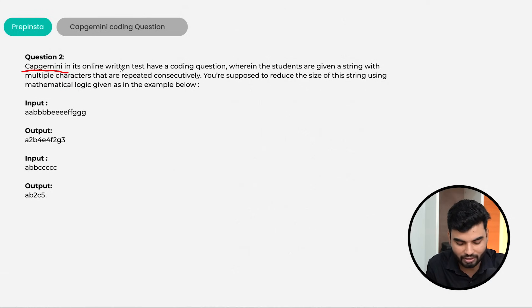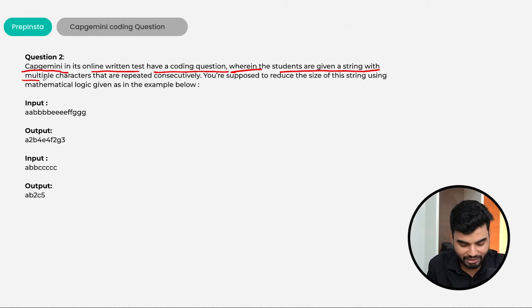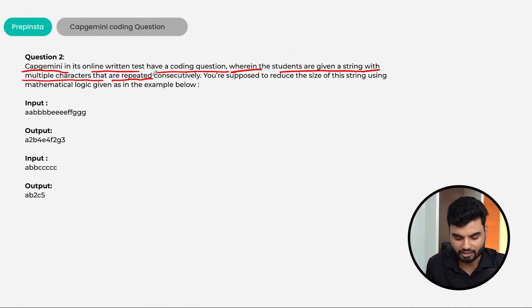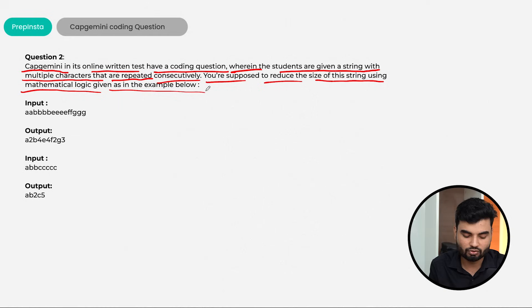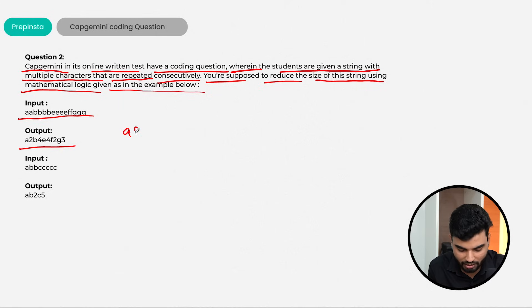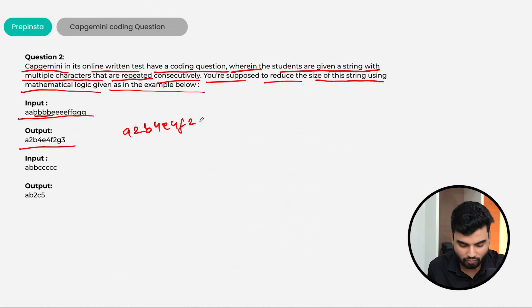Now here is another previous year Capgemini problem. It's an online written test coding question where the student is given a string with multiple characters that are repeated consecutively. You are supposed to reduce the size of this string using a mathematical logic. For example: if 'a' repeats two times write 'a2', if 'b' repeats four times write 'b4', if 'e' repeats four times write 'e4', 'f' two times write 'f2', 'g' three times write 'g3'. That is your output.